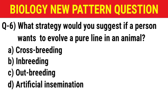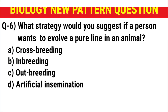Next question: What strategy would you suggest if a person wants to evolve a pure line in an animal? (A) crossbreeding, (B) inbreeding, (C) outbreeding, (D) artificial insemination. The correct answer is option B: inbreeding.